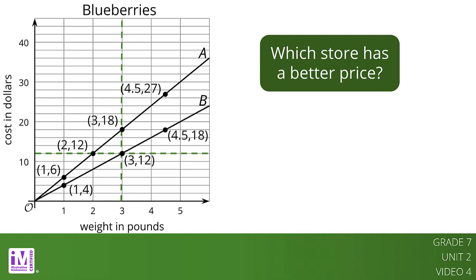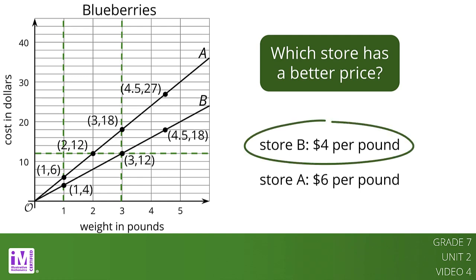We can also use the graphs to compare the constants of proportionality. The line representing store B goes through the point (1, 4), so the constant of proportionality is 4. This tells us that at store B the blueberries cost $4 per pound. This is cheaper than the $6 per pound unit price at store A.